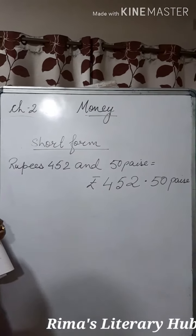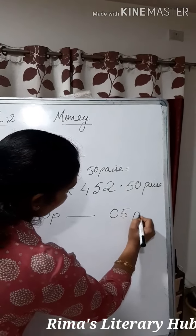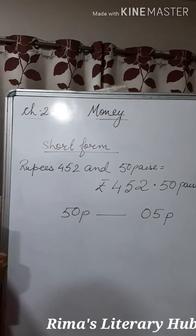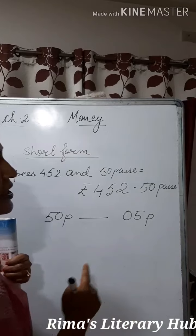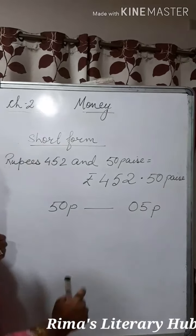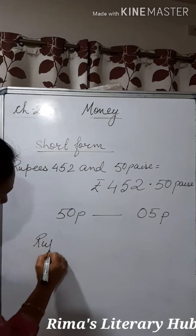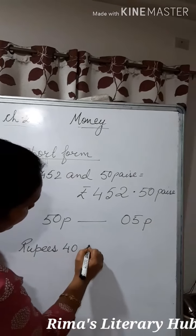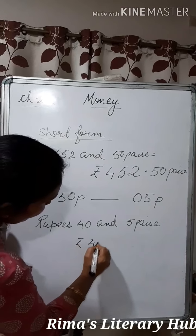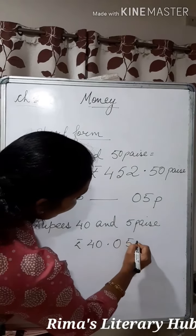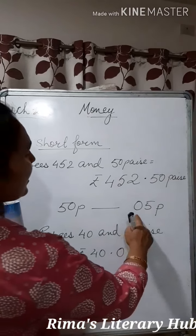A very interesting thing I would like to show you. This is 50 paise, but this is 5 paise. The relationship between a rupee and a paise is of 100. So when we have a single digit paise, we put a 0 before it. Suppose I have to write 40 rupees 5 paise — I write rupees 40.05. So 50 paise is written as 50, and 5 paise is written as 05.